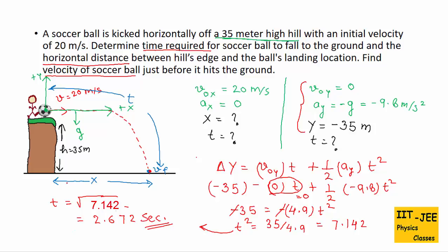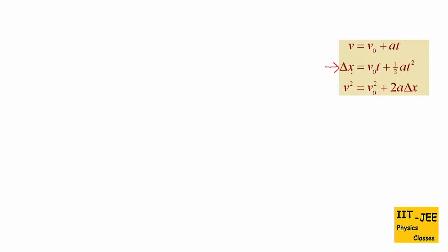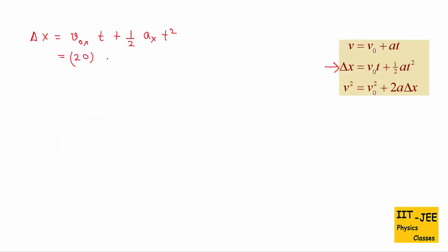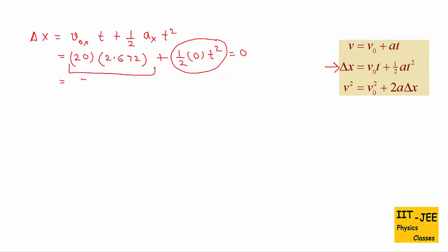Next, we find the horizontal displacement x. Using the displacement formula for horizontal motion: Δx = v₀x·t + ½·ax·t². With v₀x equals 20 meters per second, t equals 2.672 seconds, and ax equals 0, the second term vanishes. So Δx equals 20 times 2.672, which gives us 53.44 meters. The horizontal displacement of the soccer ball is 53.44 meters.